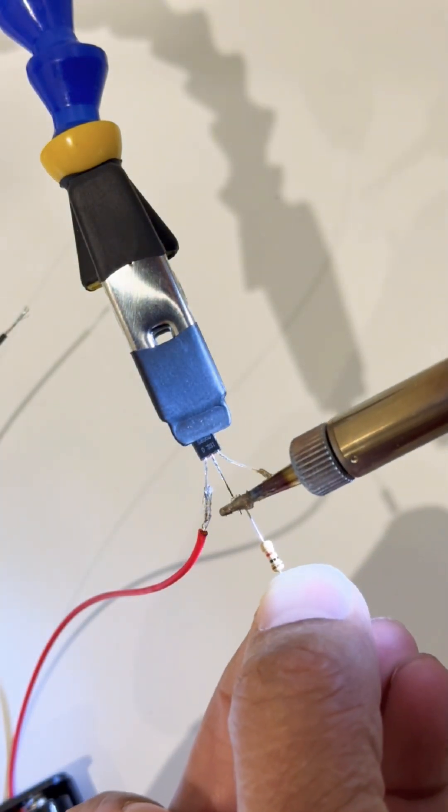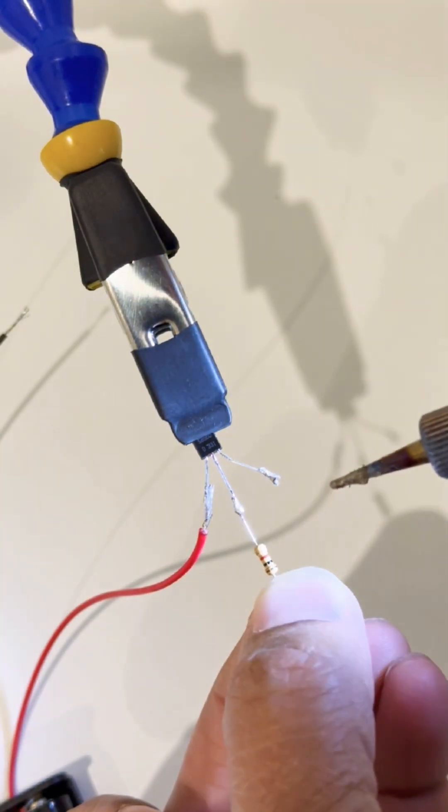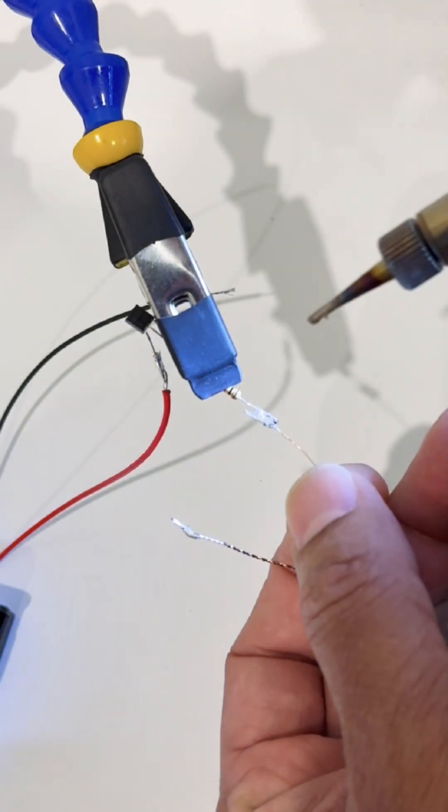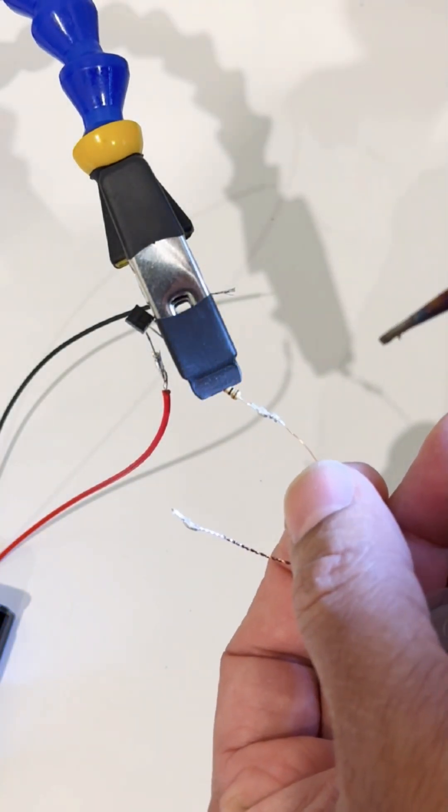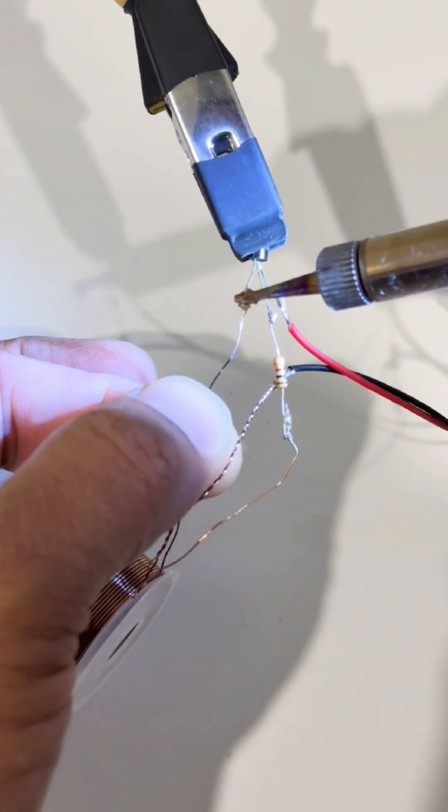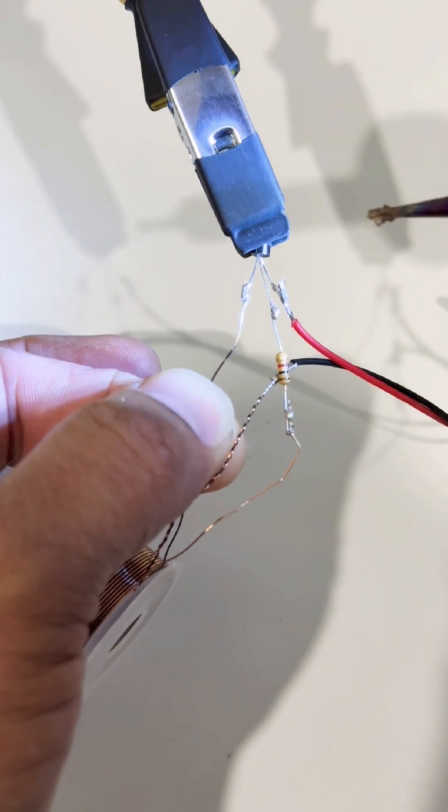Solder yellow wire of the coupling coil to the resistor. Solder coupling coil double wire to negative battery terminal. Solder emitter pin of the transistor to the black wire of the coupling coil, and then solder LED to the induction coil.